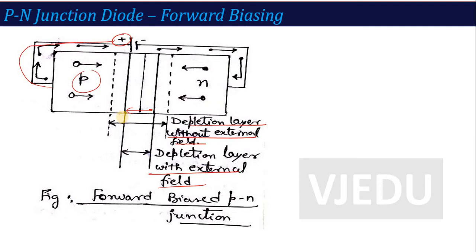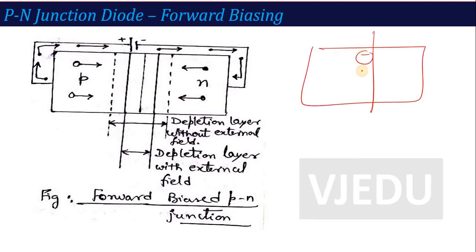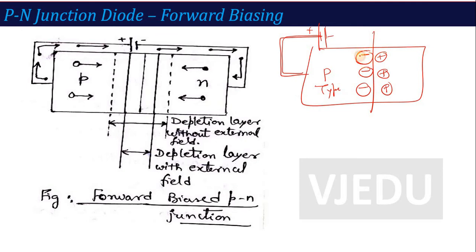Why does the depletion layer decrease? This concept is asked a lot in interview questions and VIVA, but many students do not give a good answer. Here is the simple answer. At the junction, there are negative ions on the p-side. When you apply the positive battery on the p-type, the positive battery attracts those negative ions. So those negative ions are reduced in number at the junction.